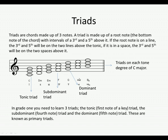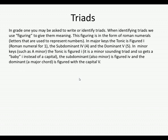When identifying triads we use what we call figuring to give them meaning. This figuring is in the form of Roman numerals. In major keys, the tonic is figured with a capital I (Roman numeral for one), the subdominant is figured with a capital IV (Roman numerals for four), and the dominant is figured with a capital V (Roman numeral for five).